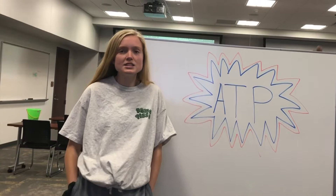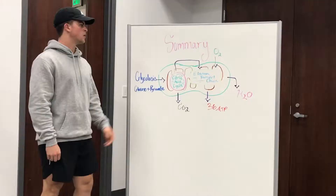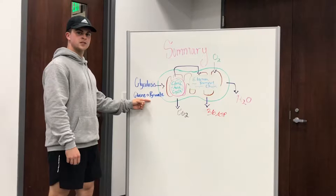ATP is the currency of energy, like dollars are for money. ATP is able to store energy, which organisms can then use at a later time. Phosphates do not like to be next to each other, so cramming three on one molecule stores a lot of energy. This is the summary of aerobic respiration.